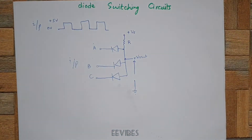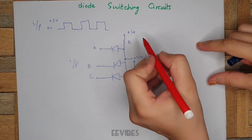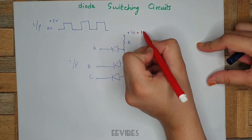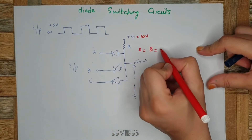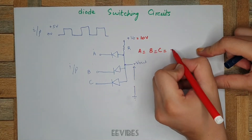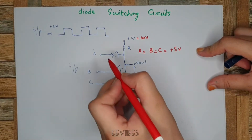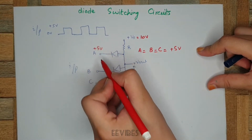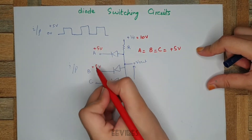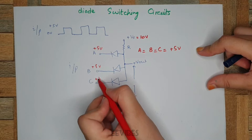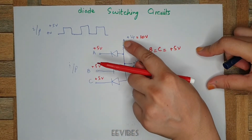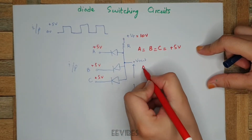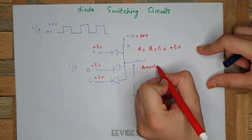Now let's see how this circuit actually works. Let's say if we connect Vs equal to 10 volts and all the inputs A, B, and C are equal to plus 5 volts, we will see how this circuit behaves. Since all inputs are equal, the anode-to-cathode potential across each diode is the same.